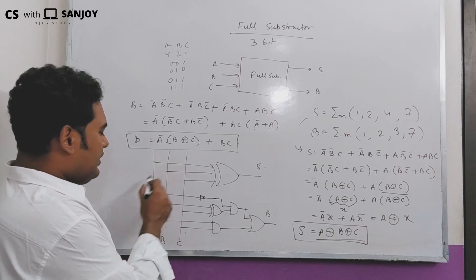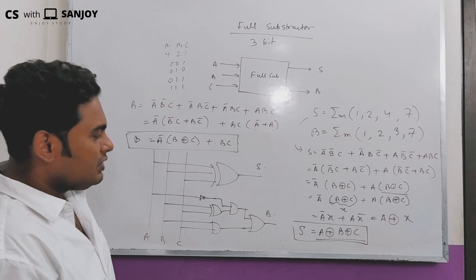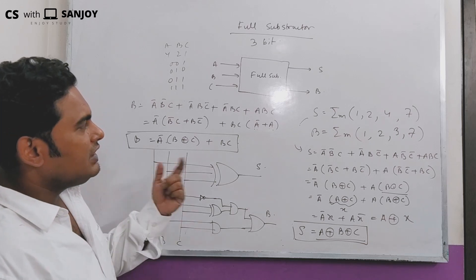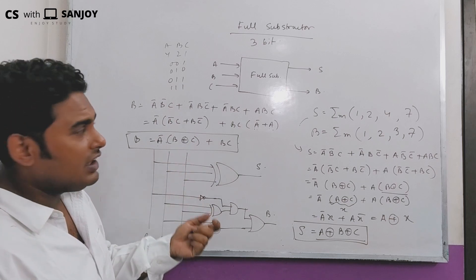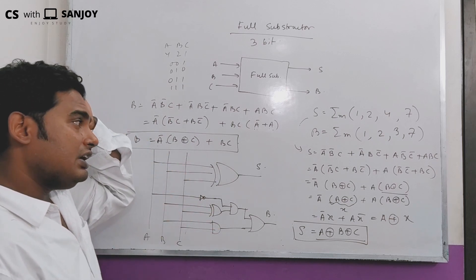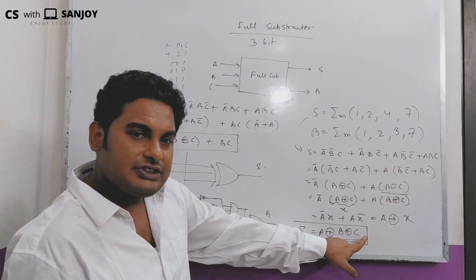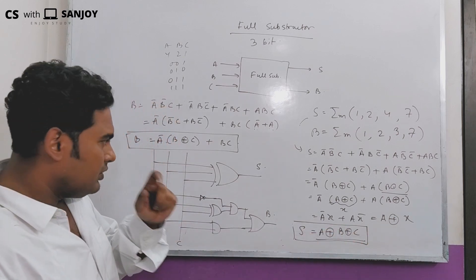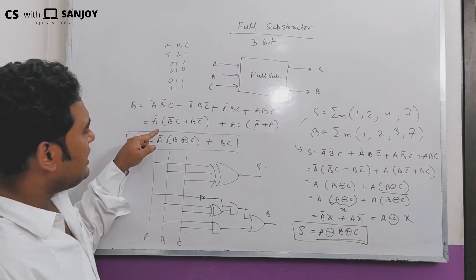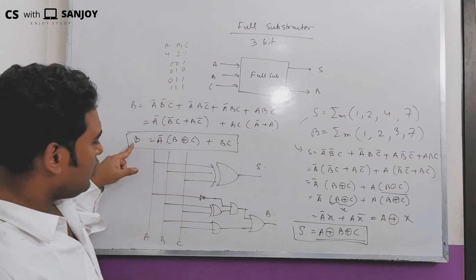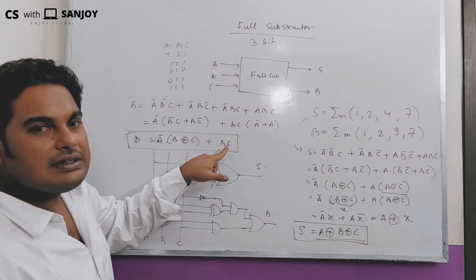Now we are going to write the half subtractor circuit diagram. Now we are going to write the full subtractor circuit diagram with inputs A, A to C, right. If you want to add A-bar: B exclusive-OR C plus B C gives the borrow output.